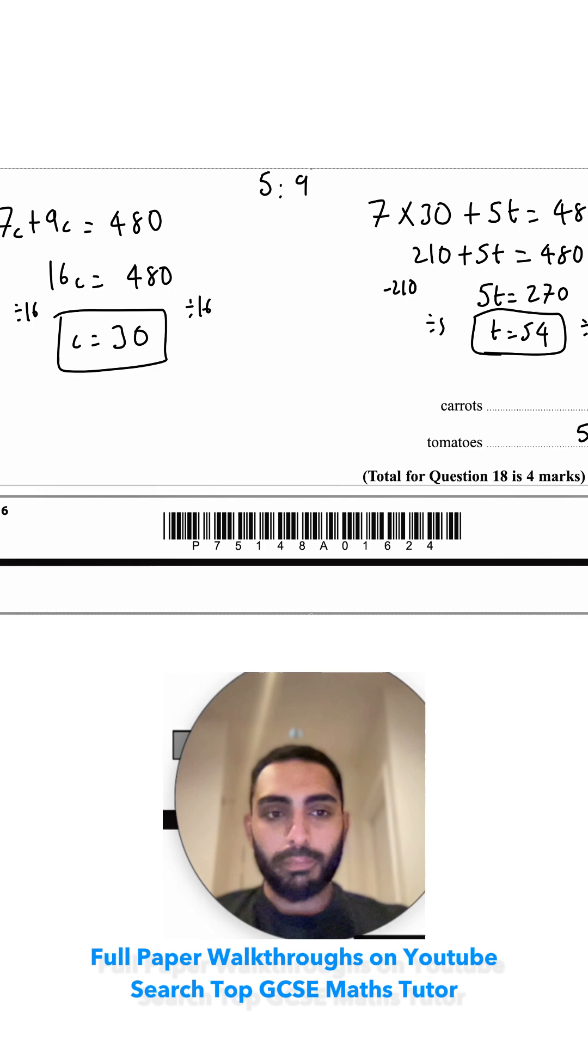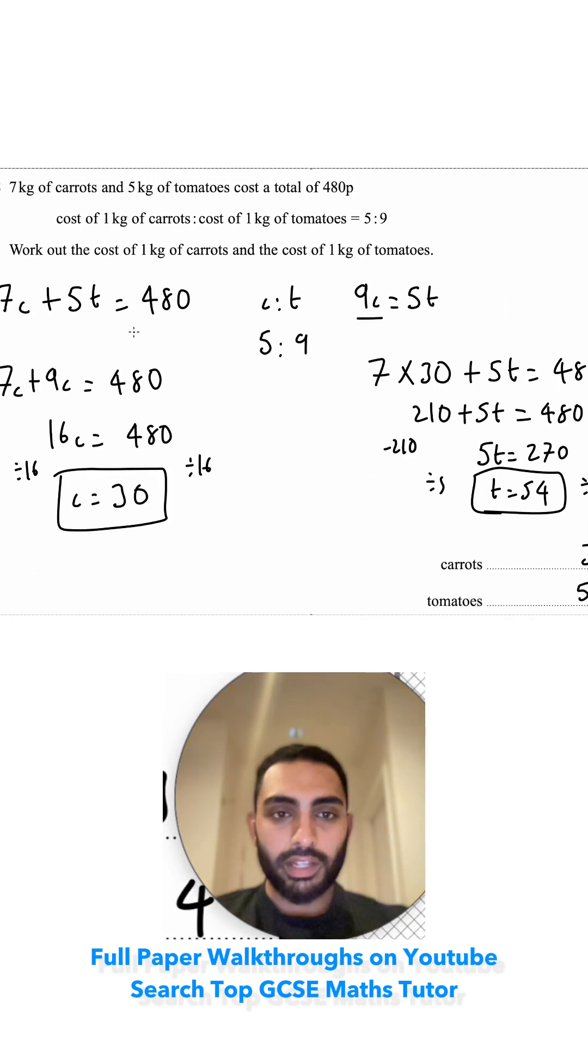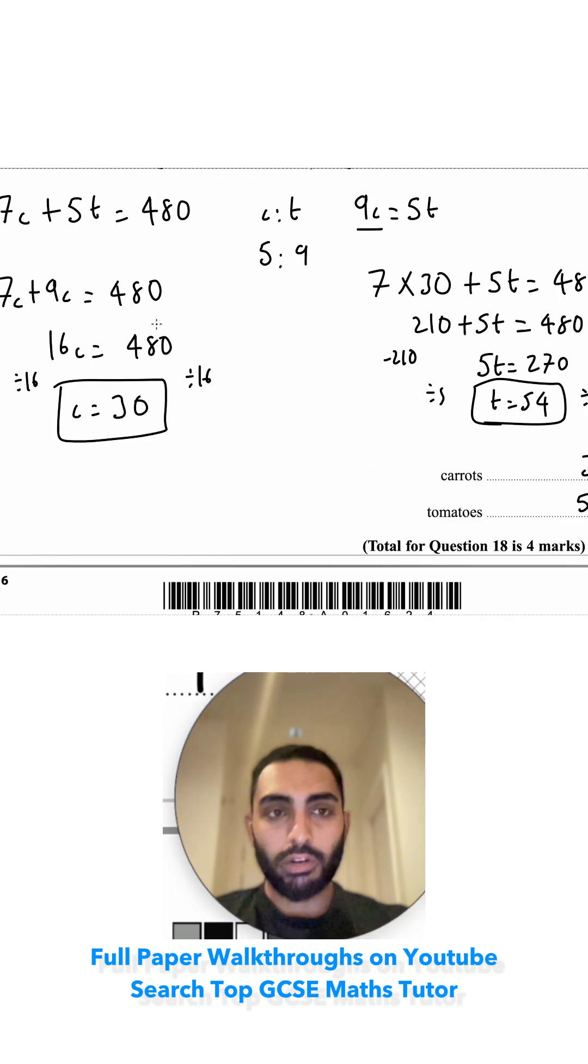t was 54p, and c is 30p. And if you substitute both of these back into here, you would get a solution of 480.